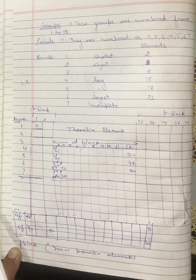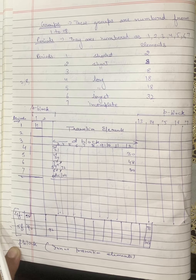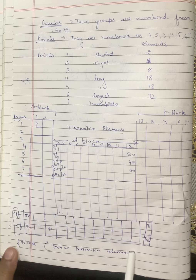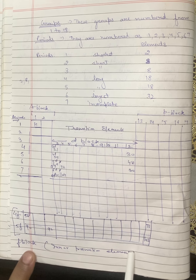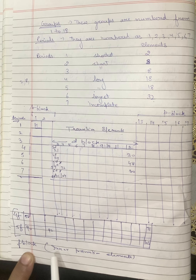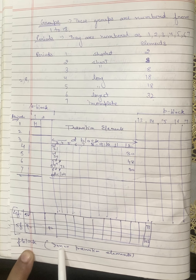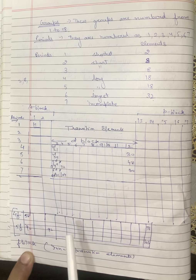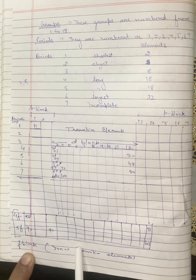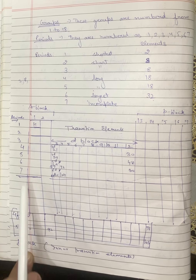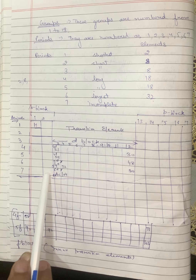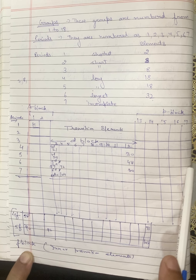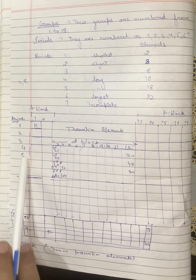As you can see in the sketch, the periodic table is divided into four blocks: s-block, p-block, d-block, and f-block. The s-block has 2 groups. The p-block has 6 groups and consists of generally non-metals.